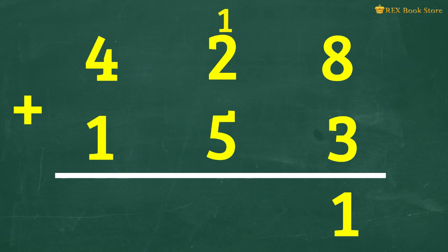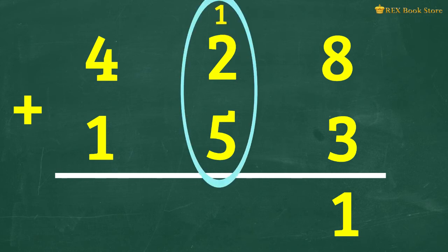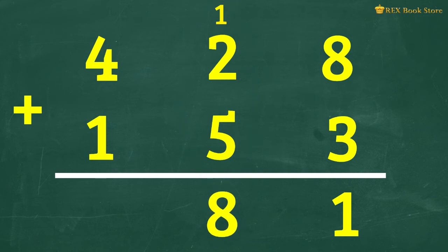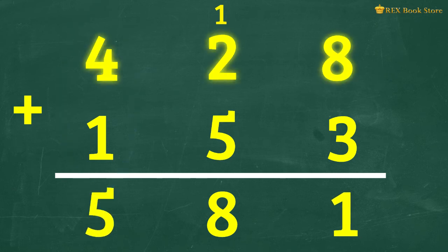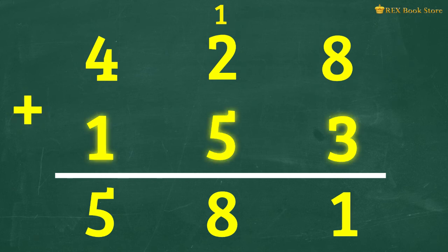Add the 1 tens to 2 tens and 5 tens to get 8 tens. Then finally, add 4 hundreds and 1 hundreds to get 5 hundreds. So 428 plus 153 equals 581.